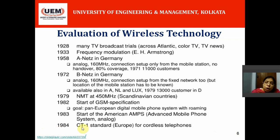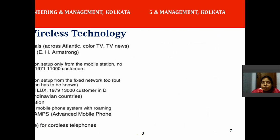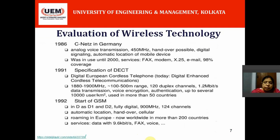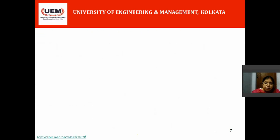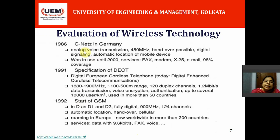In 1984, CT1 — Cordless Telephony Standard 1 — was started in Europe. CT1 is used for voice transmission only. In 1986, CNETS in Germany was introduced, featuring analog voice transmission, handover capability, digital signaling, and automatic location of mobile devices. CNETS is much superior to ANETS and BNETS.